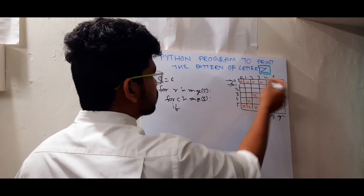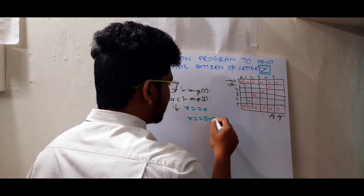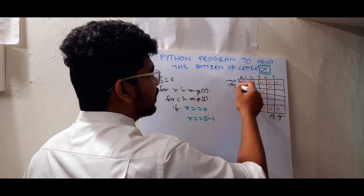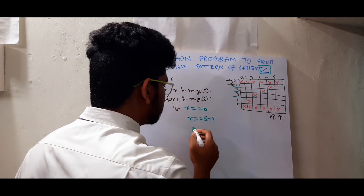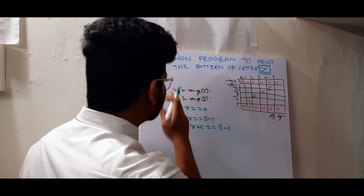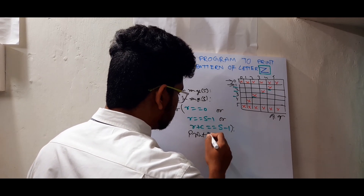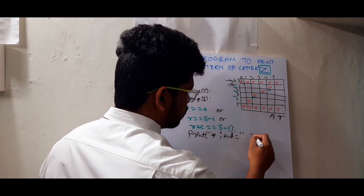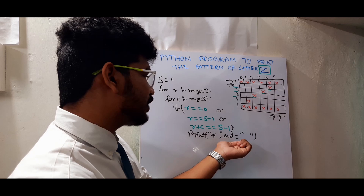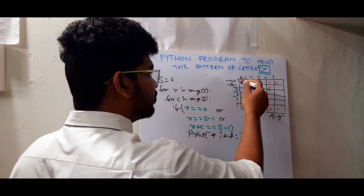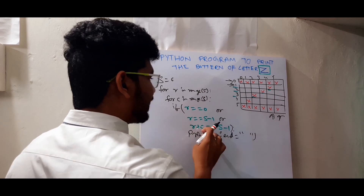For the first row: if r equals zero. For the last row: r equals s minus one. For the slanting line — notice that one plus four equals five, two plus three equals five, three plus two equals five — so row plus column equals the size, meaning r plus c equals s minus one. In these three conditions I print stars, with end set to an empty string so printing continues on the same line instead of going to the next.